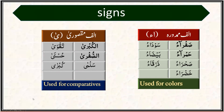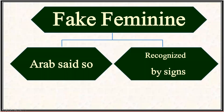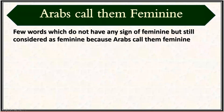The first two signs — round ta at the end and alif with elongated ta — are the two major signs. Words with alif maqsura and alif mamdooda are fewer in number in the Quran. For the second category of fake feminines — words Arabs called feminine — we do not have signs to identify them, so we will simply memorize groups that enable us to identify the feminine words used in the Quran.